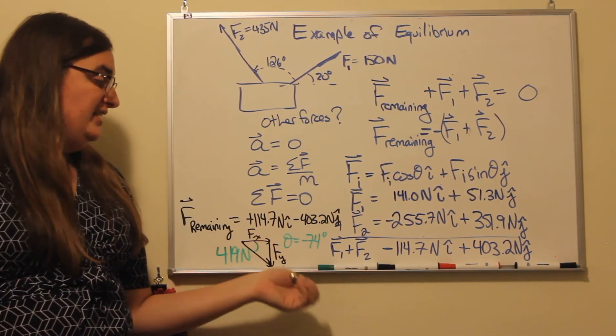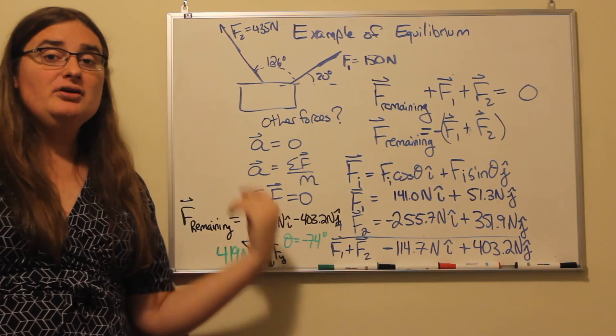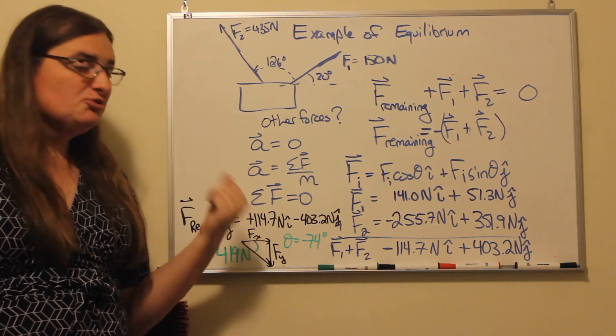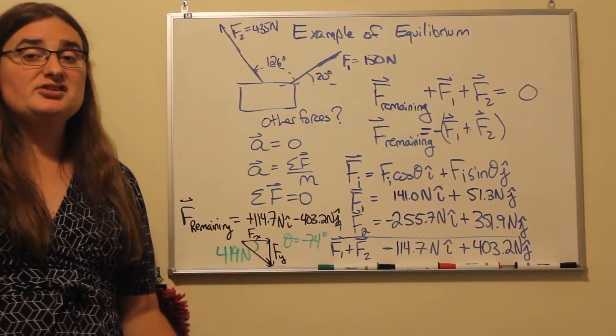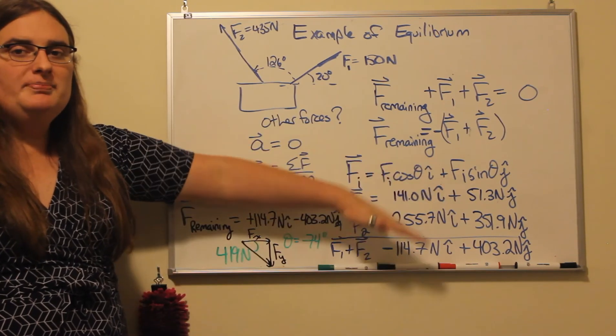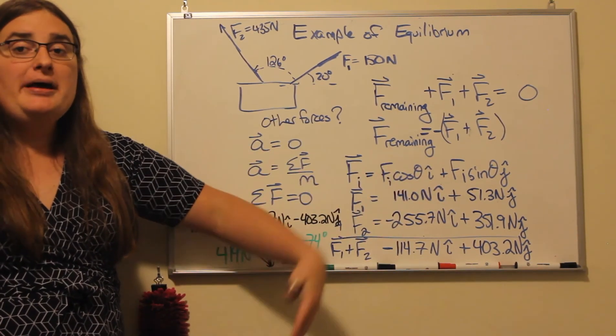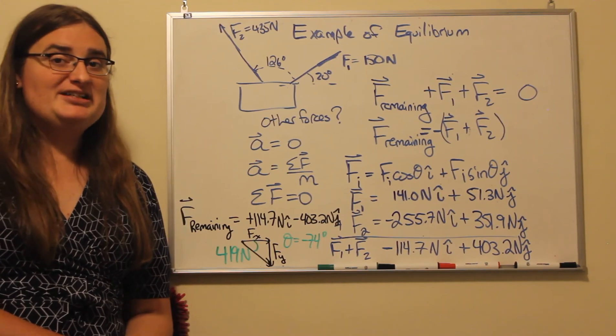So the inverse tangent of my y component over my x component gives me negative 74 degrees. So our result would be 74 degrees below the horizon. Thanks for watching.